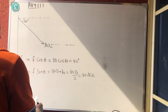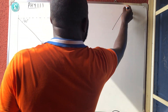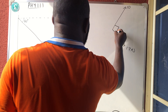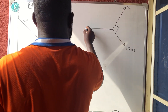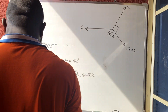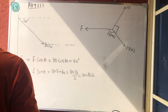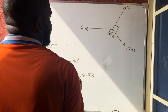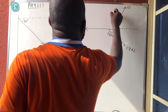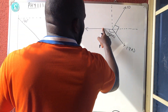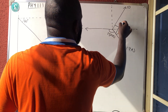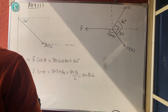The next question involves three forces: 10 Newtons, 17 Newtons, and an unknown force F. They meet at a point, with one force at 150° to the direction of F. Since 180° − 150° = 30°, the interior angle is 30°, making the complementary angle 60°.